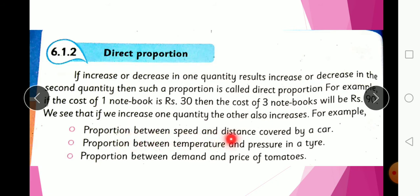Examples of direct proportion include: the proportion between speed and distance covered by a car; between temperature and pressure in a tire; and between demand and price of tomatoes. If speed is increased, more distance is covered. If temperature increases, the pressure of the tire increases. If demand for tomatoes increases, the price increases — and if demand decreases, the price decreases.